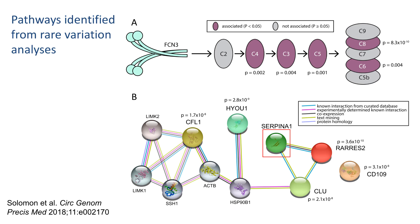As shown in the top panel, the authors examined the other rare trans-PQTLs, identifying 5 loci associated with levels of Serpin A1 — also called alpha-1 antitrypsin — CD109, CFL1, CLU, HYOU1, and RARRES2, as shown in the bottom panel. Of the 5 genes, 4 encode proteins involved in platelet degranulation.